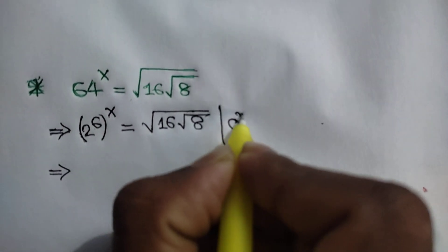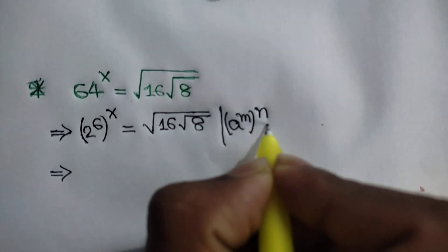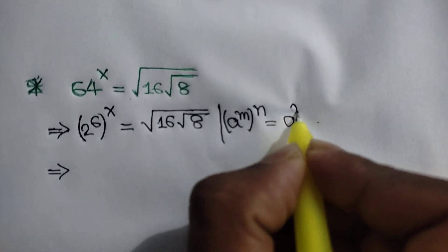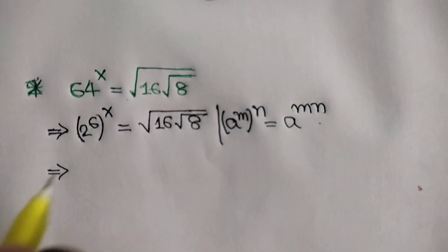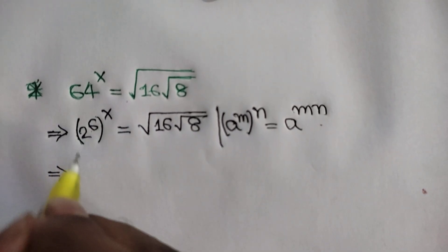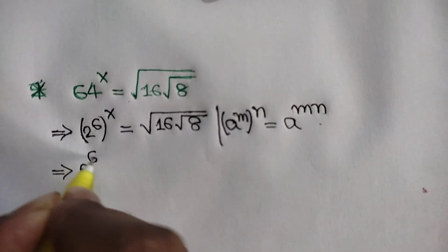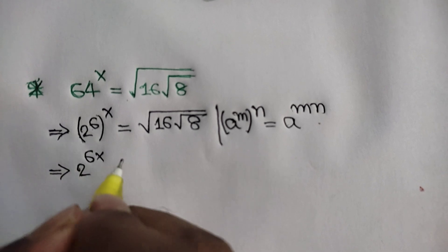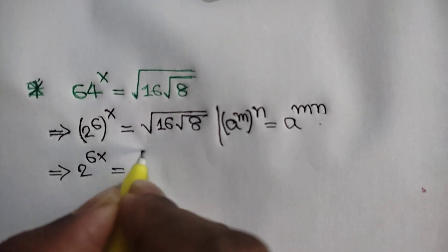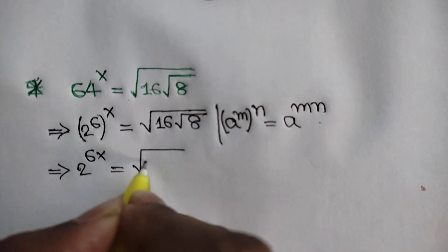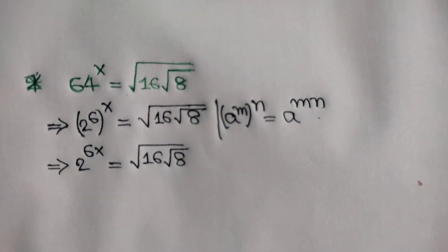The rule is: a to the power m, whole to the power n, is equal to a to the power mn. Applying this formula here, we can write 2 to the power 6x is equal to the square root of 16 times the square root of 8.